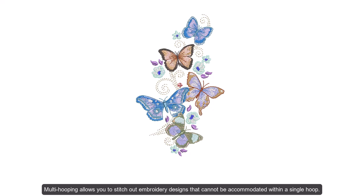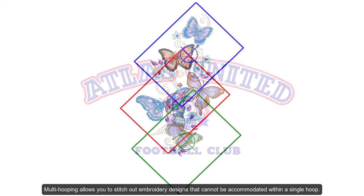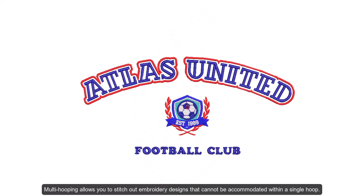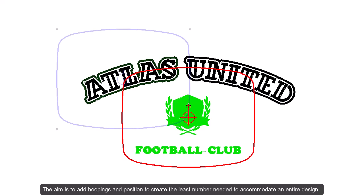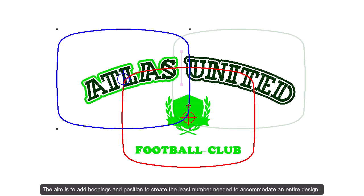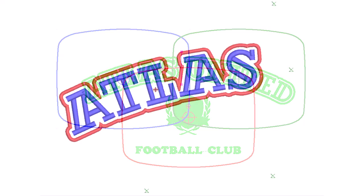Embroidery Studio provides a multi-hooping function which allows you to create multiple hoop positions. This means you can stitch out embroidery designs that are larger than can be accommodated within a single hoop. The aim is to add hoops and move them around until you get the least number of hoopings necessary to accommodate the entire design.